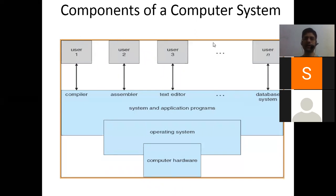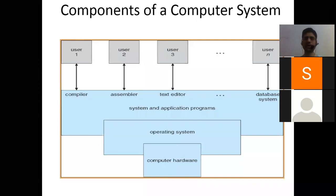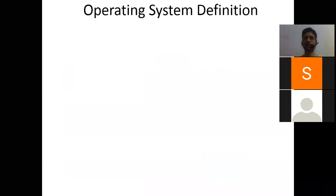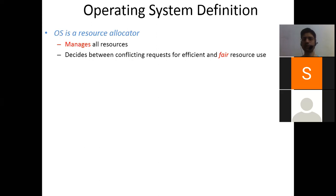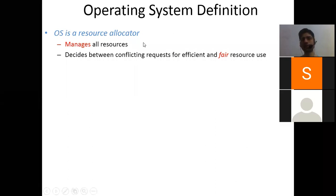The four basic components of a computer system are: users, system and application programs, the operating system, and computer hardware. Now let's discuss what an operating system is. First definition: the operating system is a resource allocator. We call it a resource allocator because it handles memory management, process management, input/output management, and security auditing. It manages all resources and decides between conflicting requests for efficient and fair resource use.